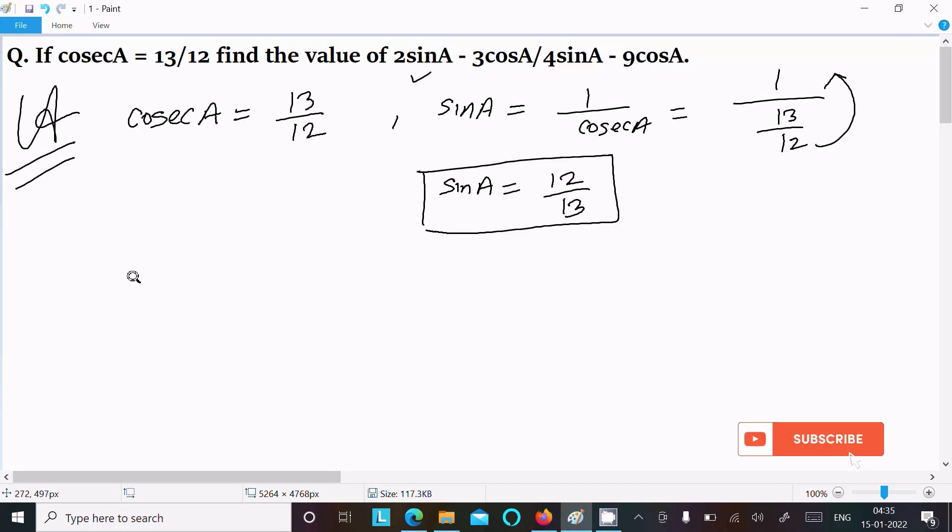Now for cosA, we can write cosA = √(1 - sin²A). So here we can write √(1 - (12/13)²).